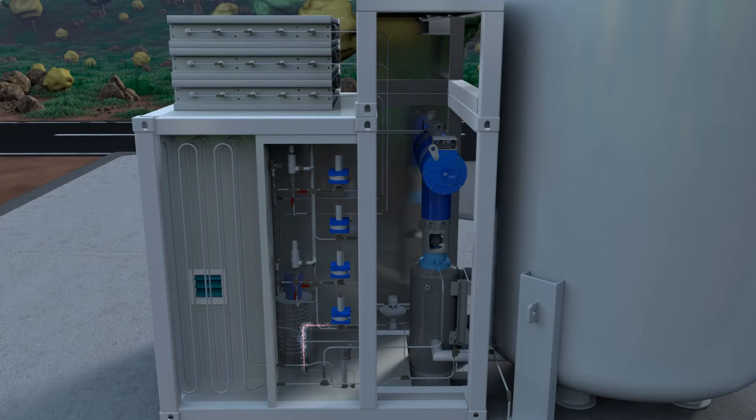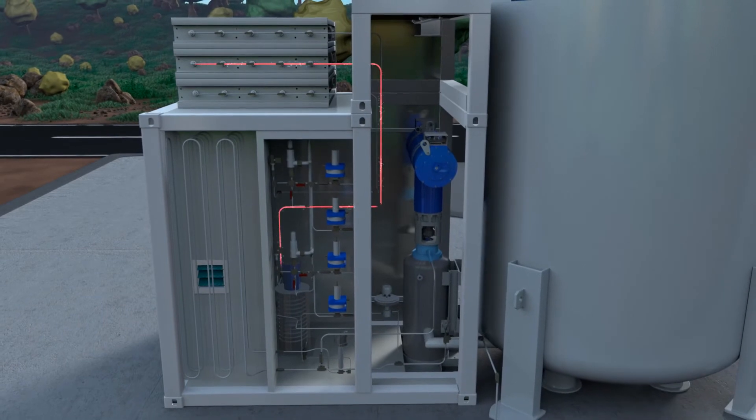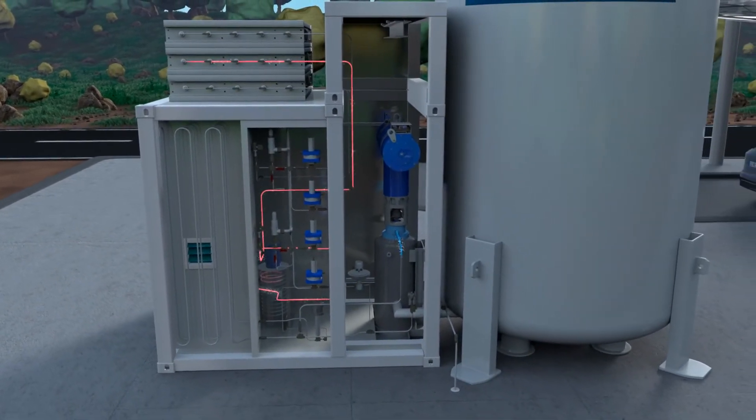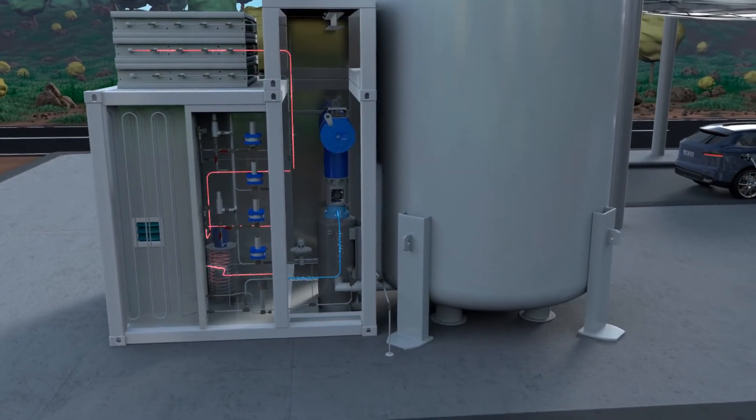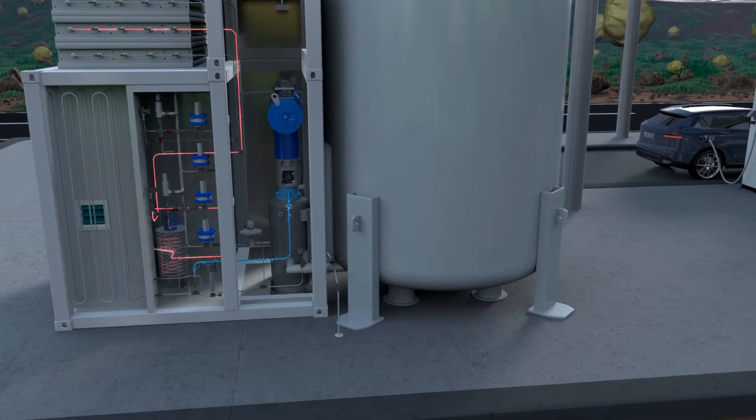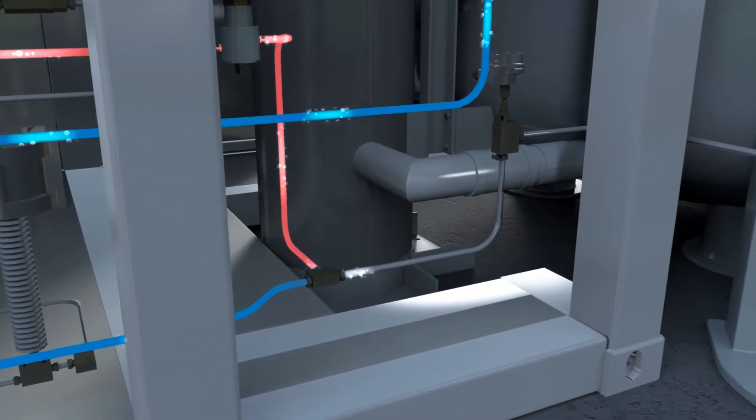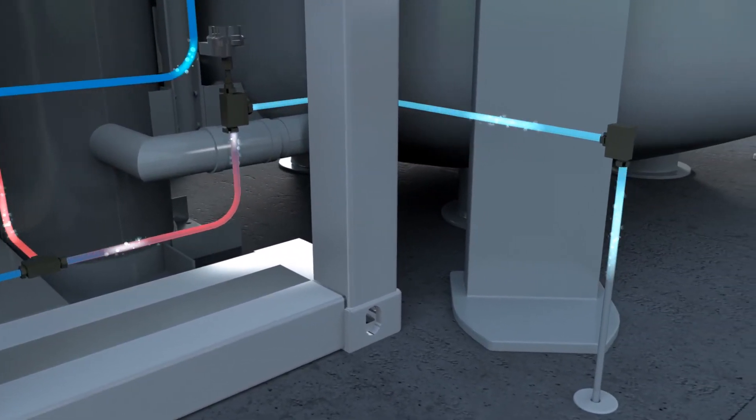After that, the hydrogen starts flowing towards the vehicle from both the pump and the storage tanks. At a temperature of approximately minus 220 degrees Celsius, the gas from the pump is still cryogenic. The hydrogen from the storage tanks, however, is at ambient temperature. When mixing the hydrogen from both sources, this difference in temperature is utilized to achieve the perfect hydrogen fueling temperature of minus 40 degrees Celsius.